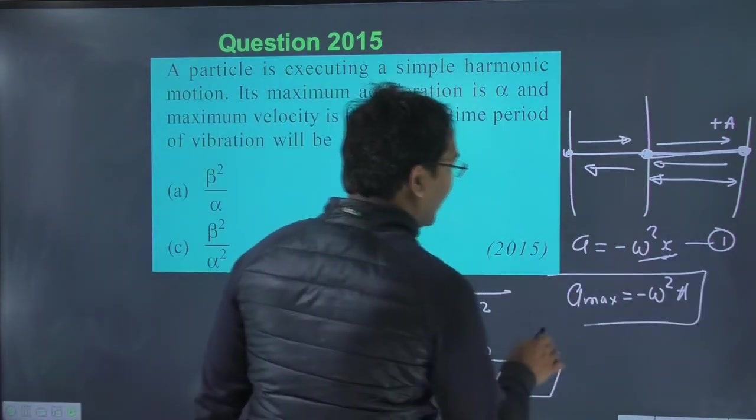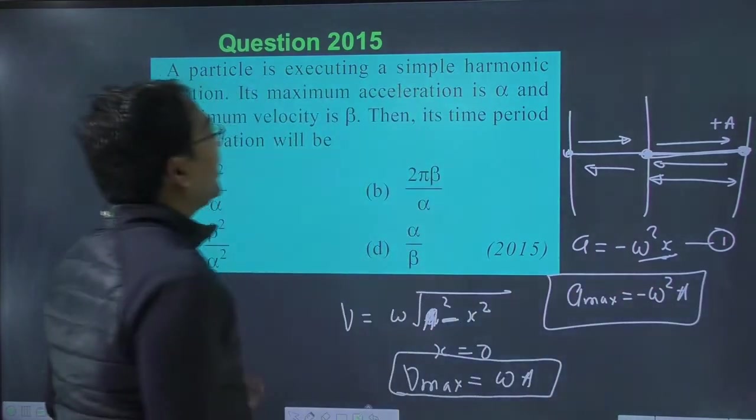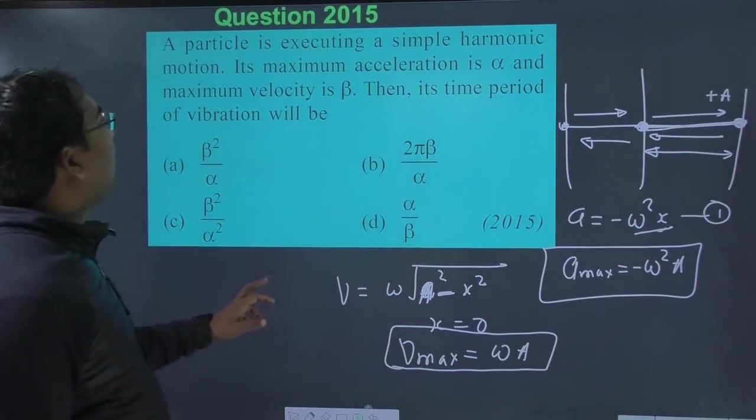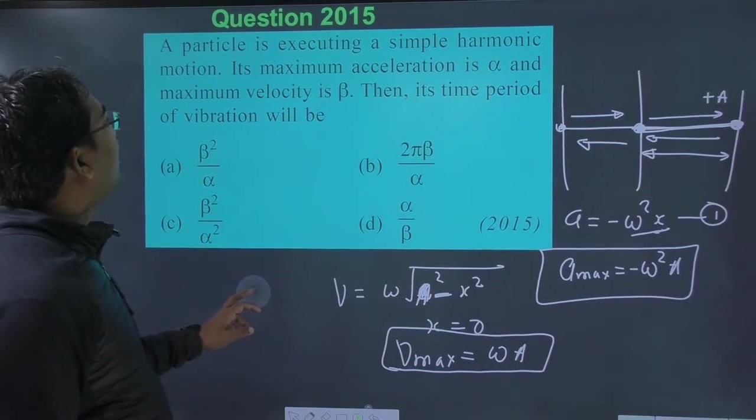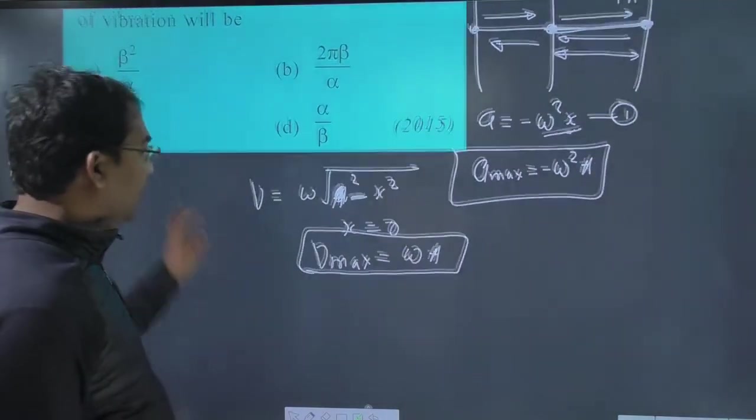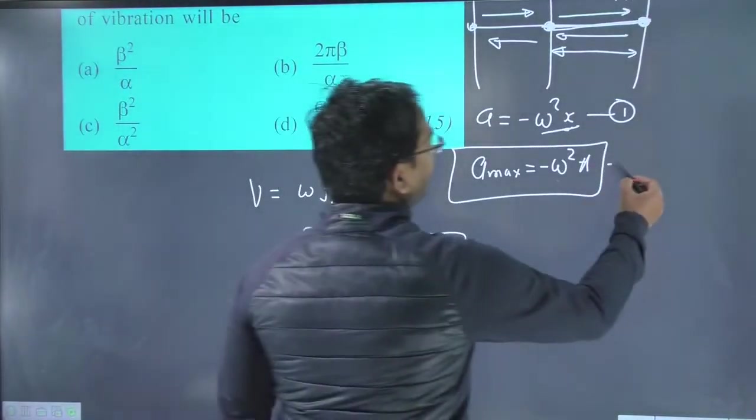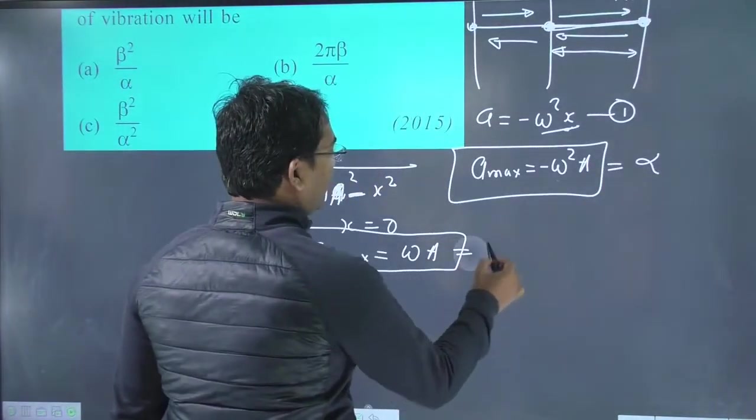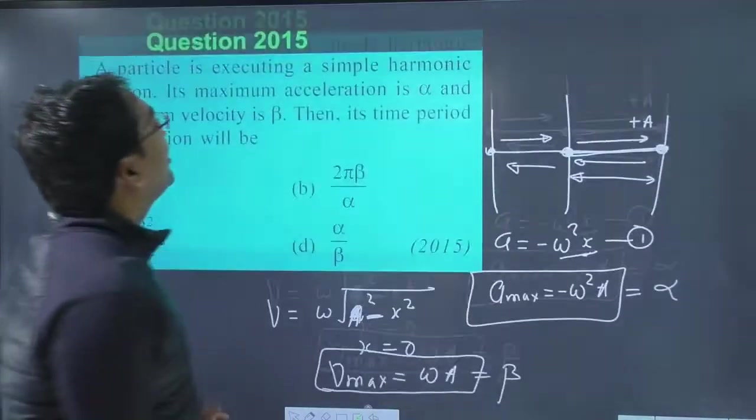This is the maximum acceleration. Ab hamein kya kehta hai. Ki maximum acceleration alpha hai and maximum velocity beta hai. To time period nikalna hai. Chalo. Time period kaise nikala jaye.